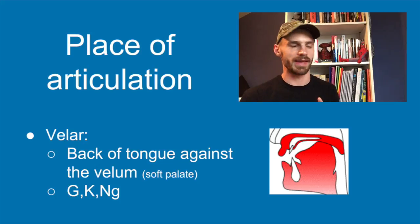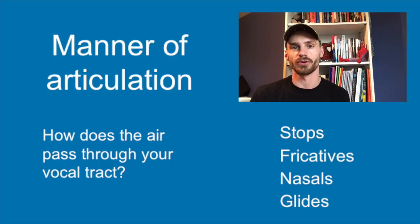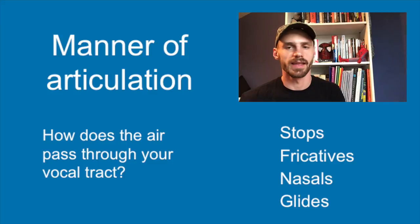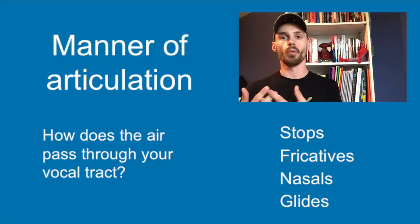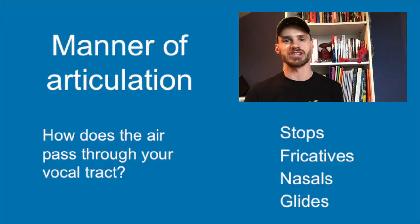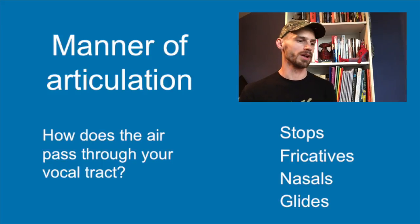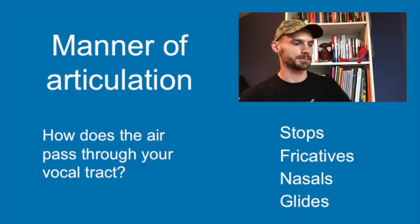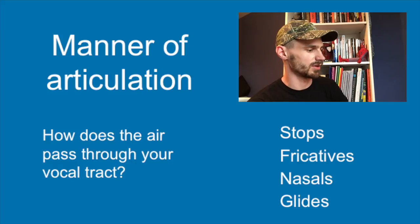That's just a few different places of articulation we have in English — there are more, and there are other places not used in English. The next criterion needed to describe speech sounds is manner of articulation, which has to do with how the air is passing through your vocal tract. While place of articulation talks about where in your mouth a constriction is taking place, manner of articulation is really talking about what kind of constriction or obstruction to the airflow is inherent to that speech sound.